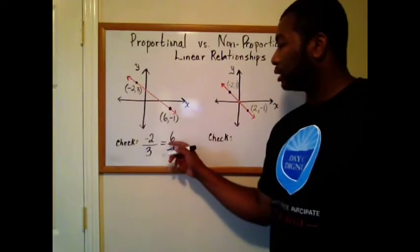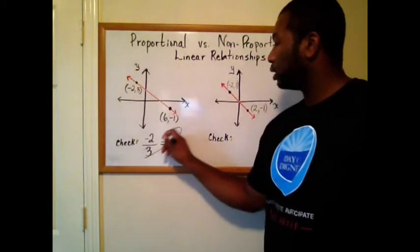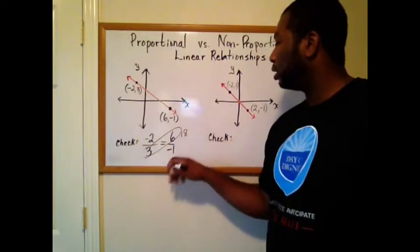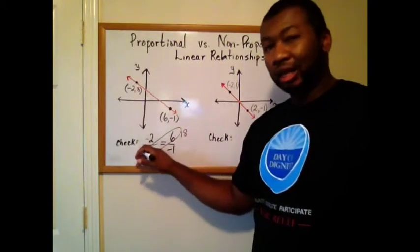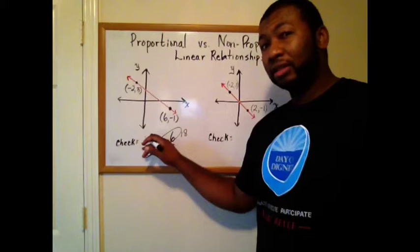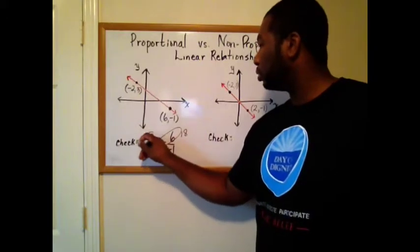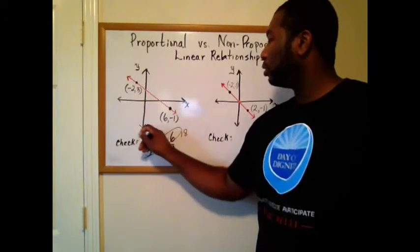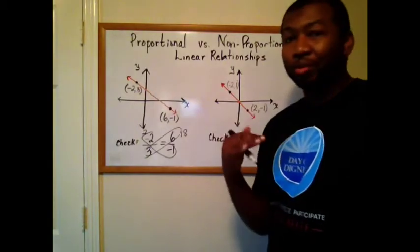Three times six, 18, negative one times a negative two, smiley face, positive two. So not proportional.